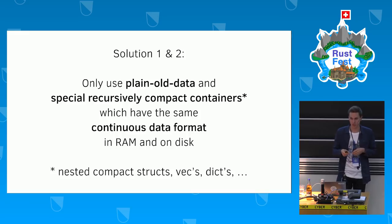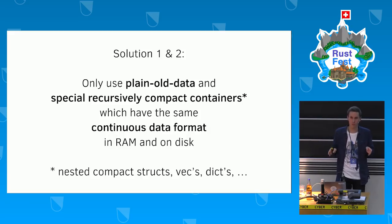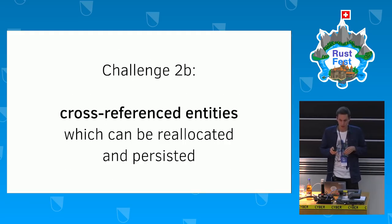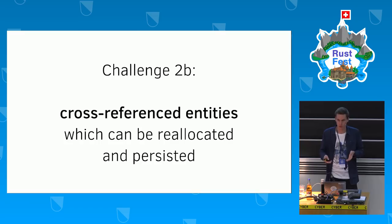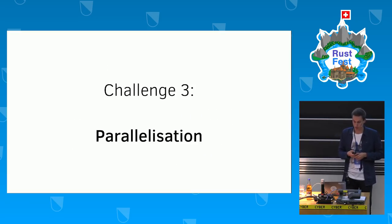I decided to use only plain old data and what I call recursively compact containers, where you have a struct of vectors or a dictionary, but each is laid out consecutively in memory, and if they grow the whole thing grows. The important thing is that every entity has a continuous data format that is the same both in RAM and on disk. Because these entities cross-reference each other and can both be moved in memory and persisted to disk, plain pointers stop working, so the solution is to use entity IDs as references and slot maps that resolve entity IDs into actual pointers at runtime.